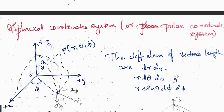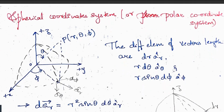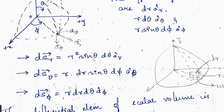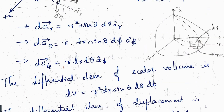Spherical coordinate system, also called the polar coordinate system. Place a point P in the xyz plane with coordinates r, θ, and φ. The differential elements of vector length are: dr·âr, r·dθ·âθ, and r·sinθ·dφ·âφ. For the surfaces: dSr = r²·sinθ·dθ·dφ·âr, dSθ = r·dr·sinθ·dφ·âθ, and dSφ = r·dr·dθ·âφ.